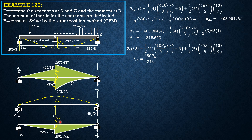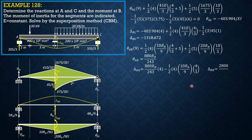We now compute delta_B due to reaction. Summation of moments about B considering segment AB equals zero: counterclockwise equals clockwise, so theta_AR × 4, which is (880R_B/243) × 4, minus the moment of the load one-half of 4 × (10R_B/9) × (4/3). Simplifying gives theta_B right equals 2800R_B / 243. Since theta_B left plus theta_B right must equal zero (no yielding at B), we add the two.